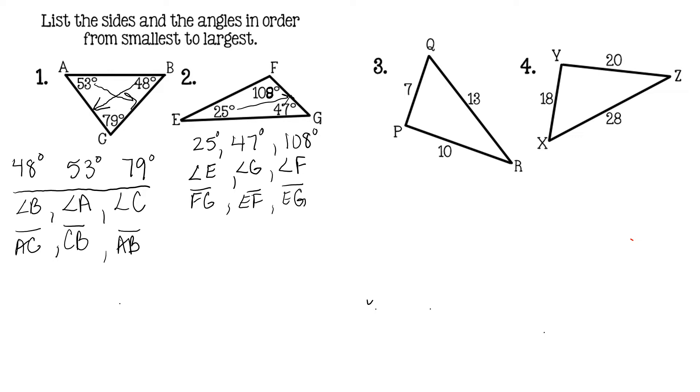Now we can do the same thing, but looking at the sides. So obviously, 7 is the smallest side, 10, and then 13. So let's do the side measures, or the side name for 7 is PQ, the side for 10 is PR, and the side for 13 is QR.